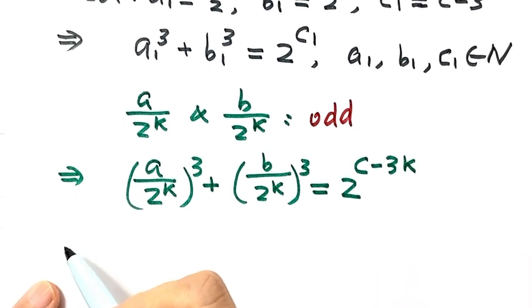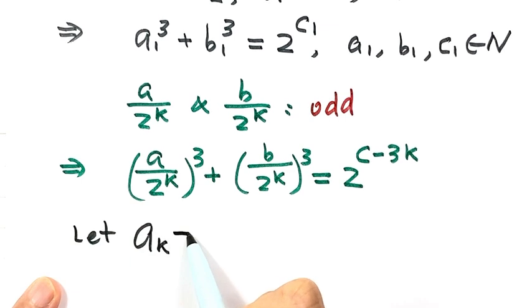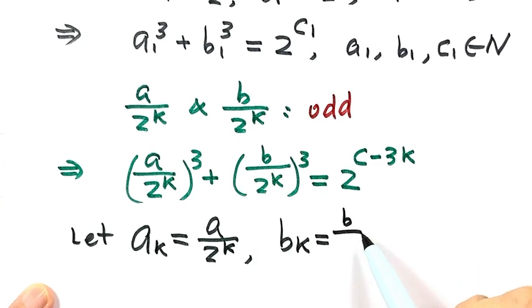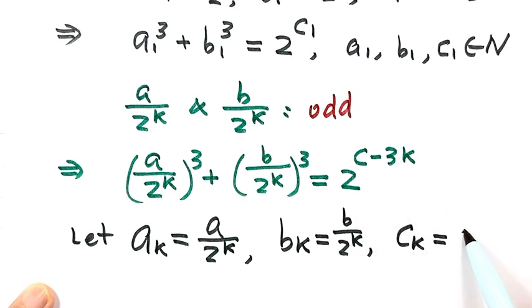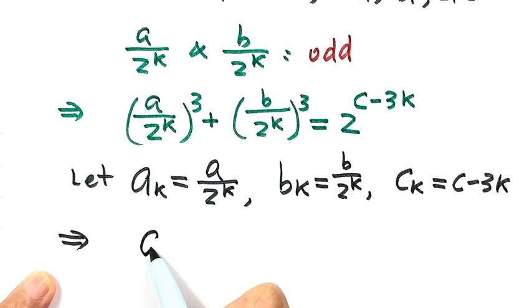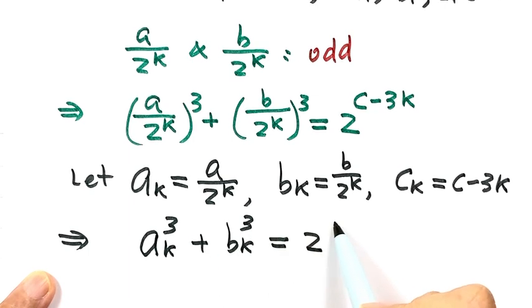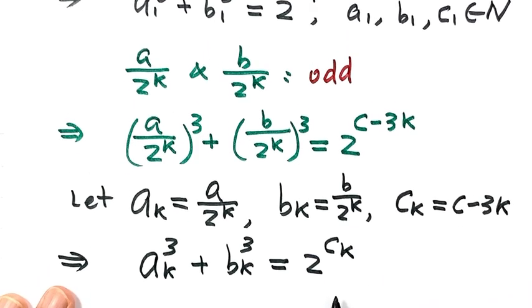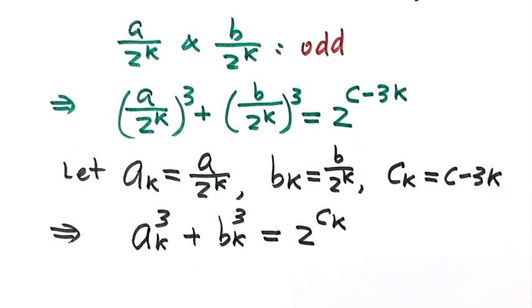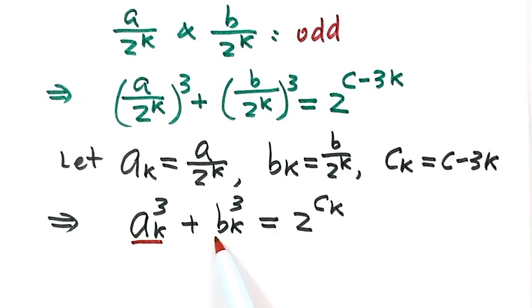We let AK = A/2^K, BK = B/2^K, and CK = C − 3K. Then we have AK³ + BK³ equals 2 to the power of CK. This equation is in the same form as the original given condition, and this time AK and BK are both odd numbers.